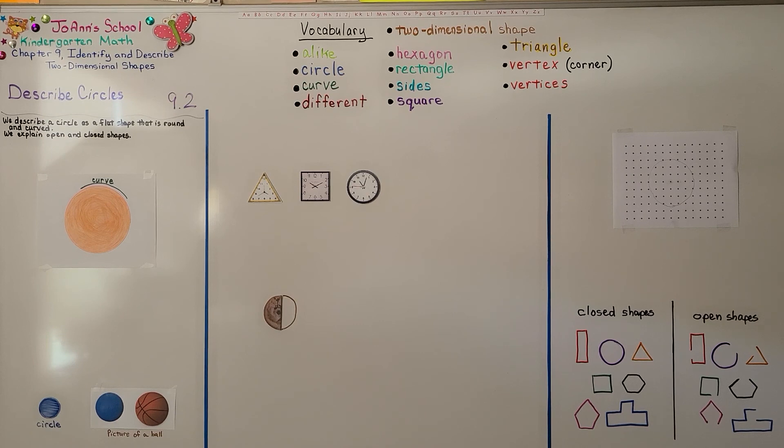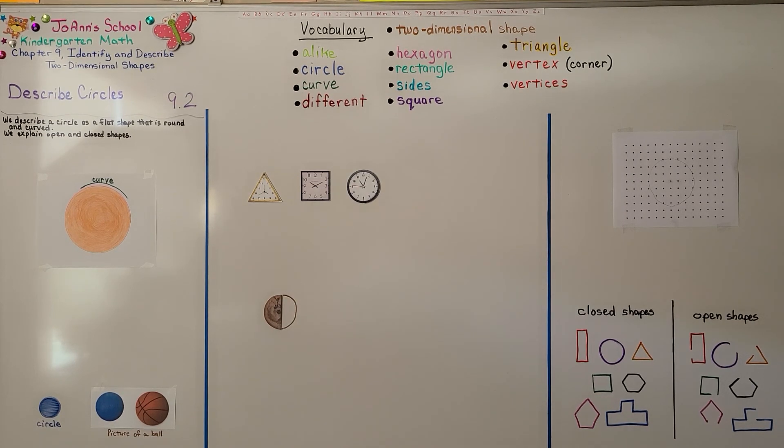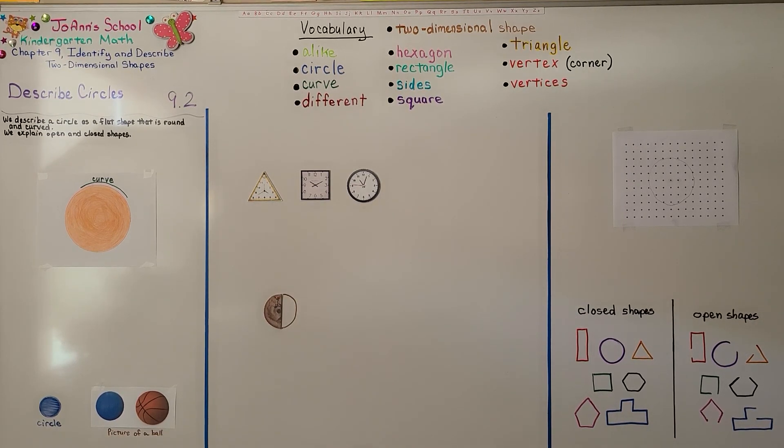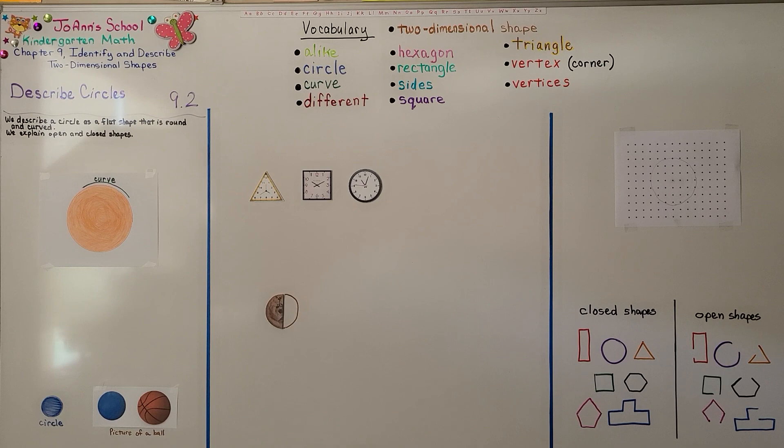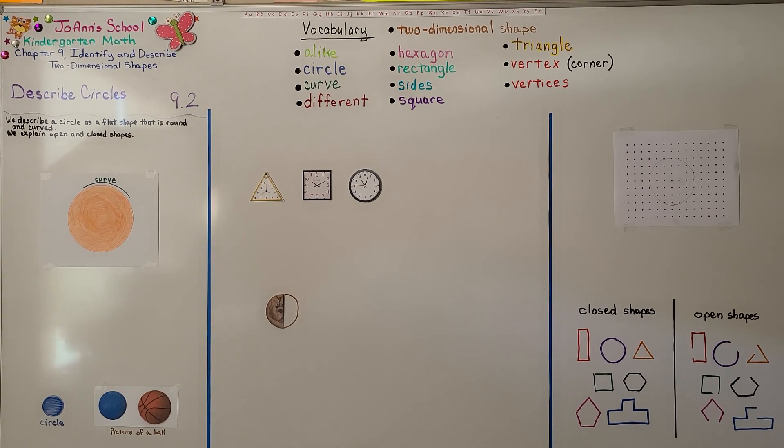So remember, a circle is round, curved, and flat. And remember, there are closed shapes and open shapes. In our next lesson, 9.3, we're going to identify and name squares. I hope you'll join me. I hope you have a really nice day, and I hope you hit the like button. Bye!